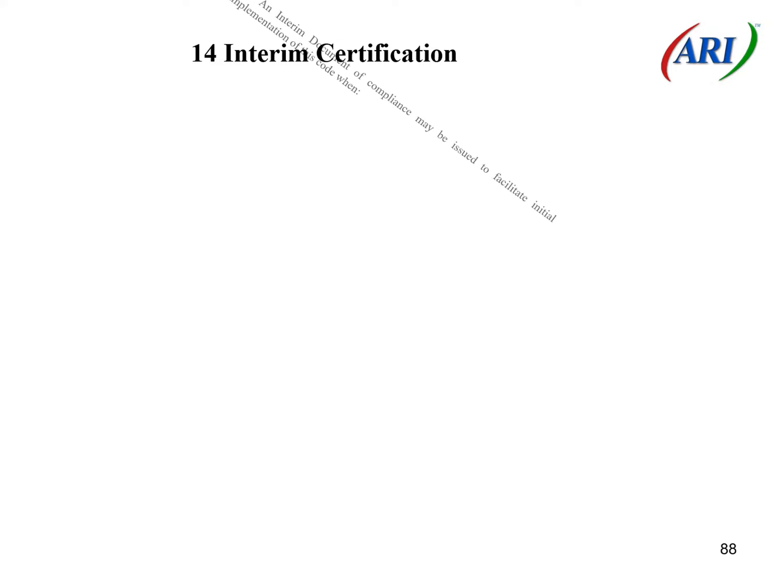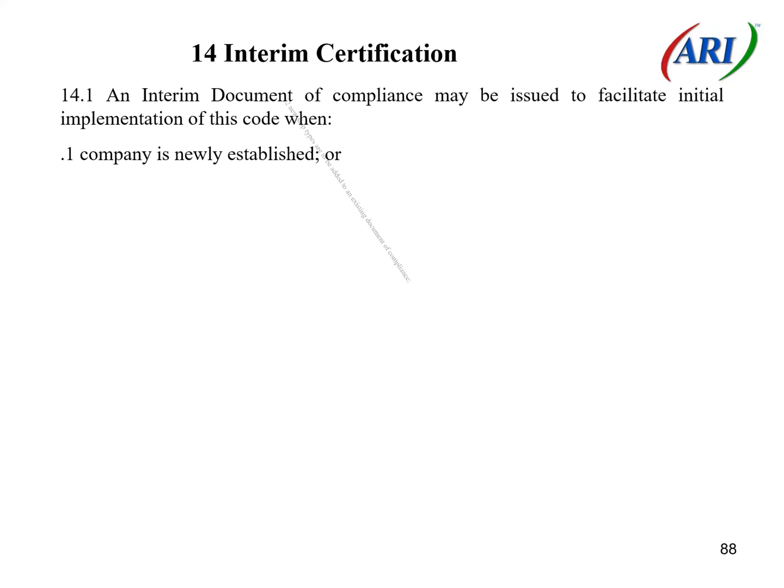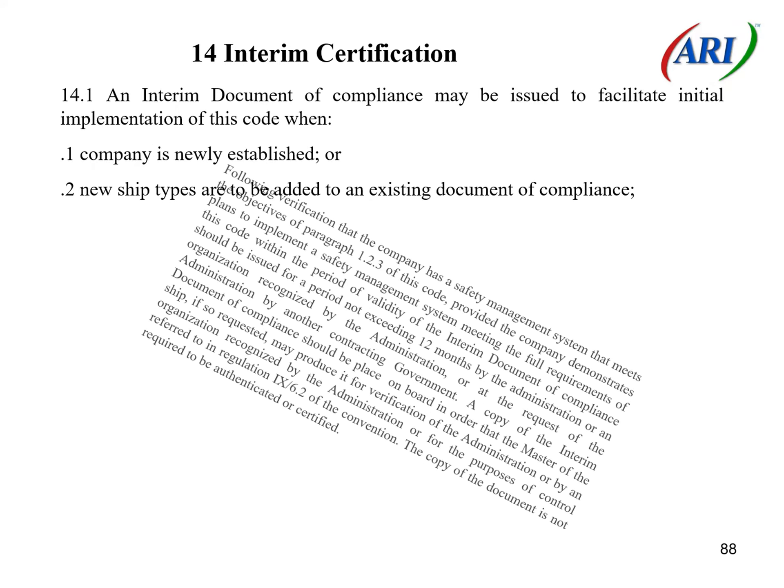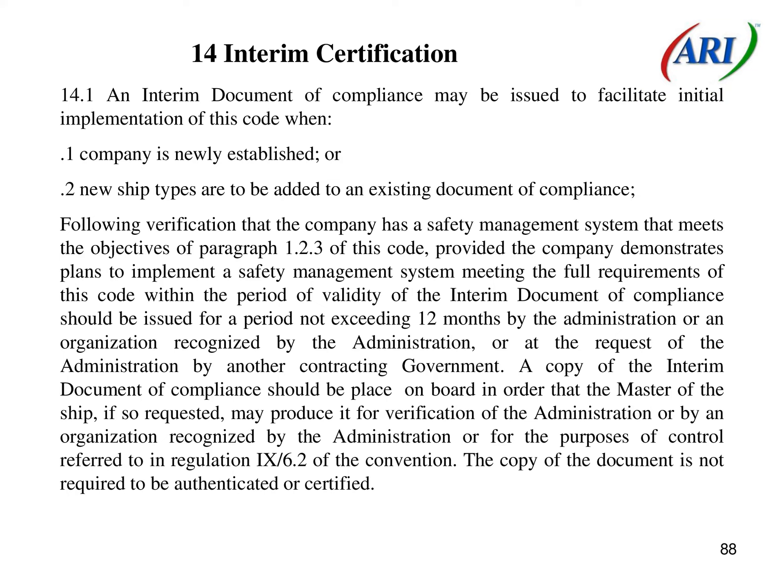Section 14: Interim Certification. 14.1 An interim document of compliance may be issued to facilitate initial implementation of this code when: 1. A company is newly established, or 2. New ship types are to be added to an existing document of compliance, following verification that the company has a safety management system that meets the objectives of paragraph 1.2.3 of this code, provided the company demonstrates plans to implement a safety management system meeting the full requirements. The interim document of compliance should be issued for a period not exceeding 12 months by the administration or an organization recognized by the administration.